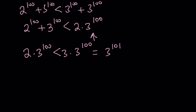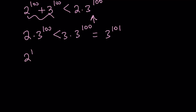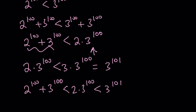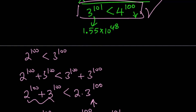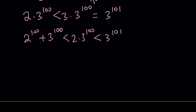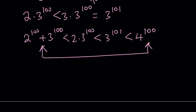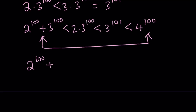Awesome. This gives us a way to compare 2 times 3 to the power of 100 with 3 to the power of 101. So as a result, we get the following: 2 to the power of 100 plus 3 to the power of 100 is less than 2 times 3 to the power of 100, which is less than 3 to the power of 101. So we have a chain of inequalities. But remember, 3 to the power of 101 was already compared to a power of 4, so we can include that and write 3 to the power of 101 is less than 4 to the power of 100.